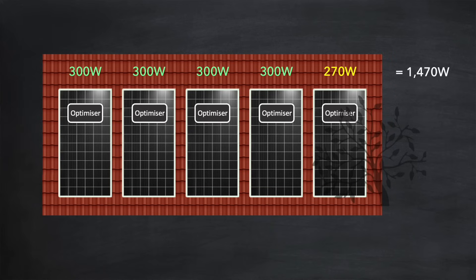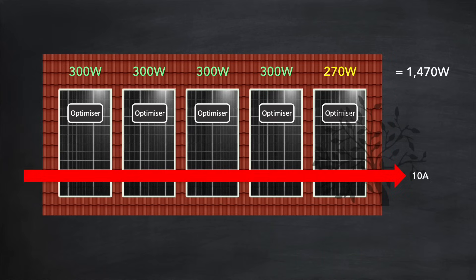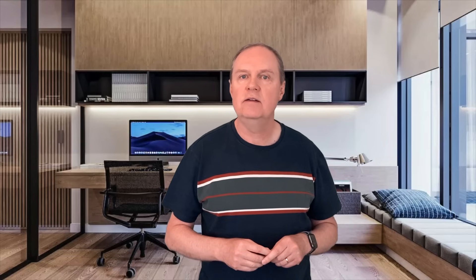Essentially, what is happening is that the optimizers are trying to preserve the current throughout the array, which here is 10 amps at peak generation. For the unshaded panels, 10 amps can flow easily. But the shaded panel will only allow 9 amps to flow. And if there were no optimizers in place, that would restrict all the other panels to 9 amps as well. But the optimizer on that shaded panel will work out that 9 amps is the maximum current that can flow through it, and simply route the remaining 1 amp around the panel to preserve the overall 10 amps.